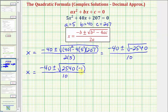And we know the square root of -1 is equal to i, so let's go ahead and write this as -40 plus or minus the square root of 2540 times i, divided by 10.